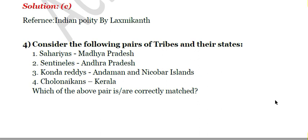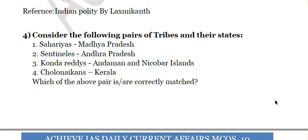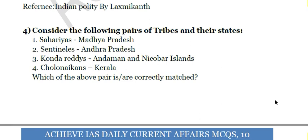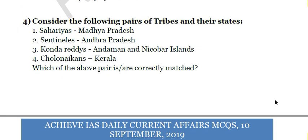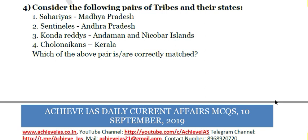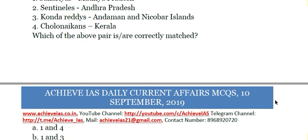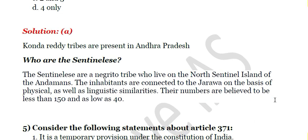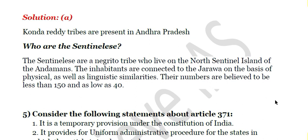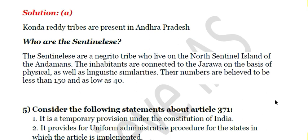The fourth question asks to match tribes and their states: Sahariyas – Madhya Pradesh; Sentinelese – Andhra Pradesh; Konda Reddis – Andaman and Nicobar Islands; Cholanaikkans – Kerala. Only the first and fourth pairs are correctly matched; the second and third are interchanged. Konda Reddis are in Andhra Pradesh and Sentinelese are in Andaman and Nicobar. Sentinelese are a Negrito tribe of North Sentinel Island, related to the Jarawas, with a population believed to be less than 150, as low as 40.